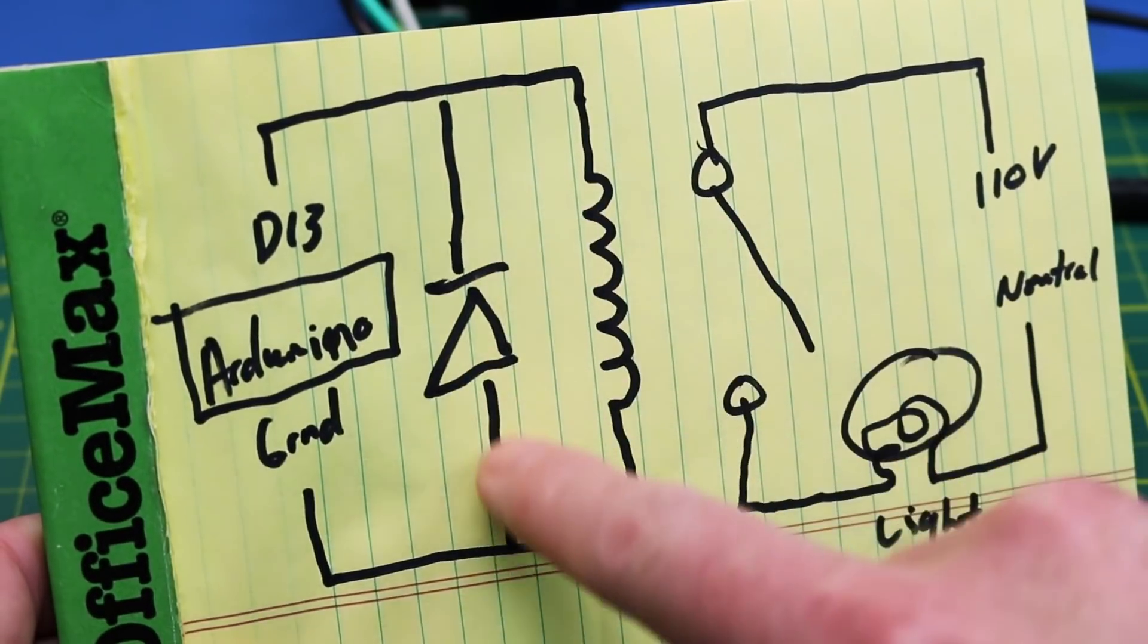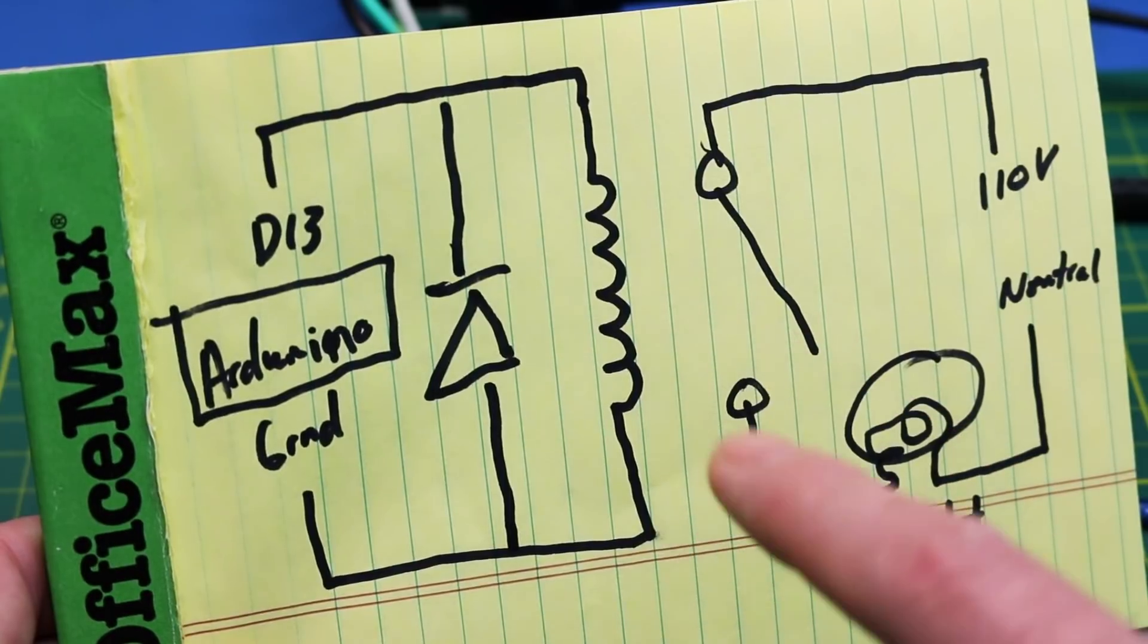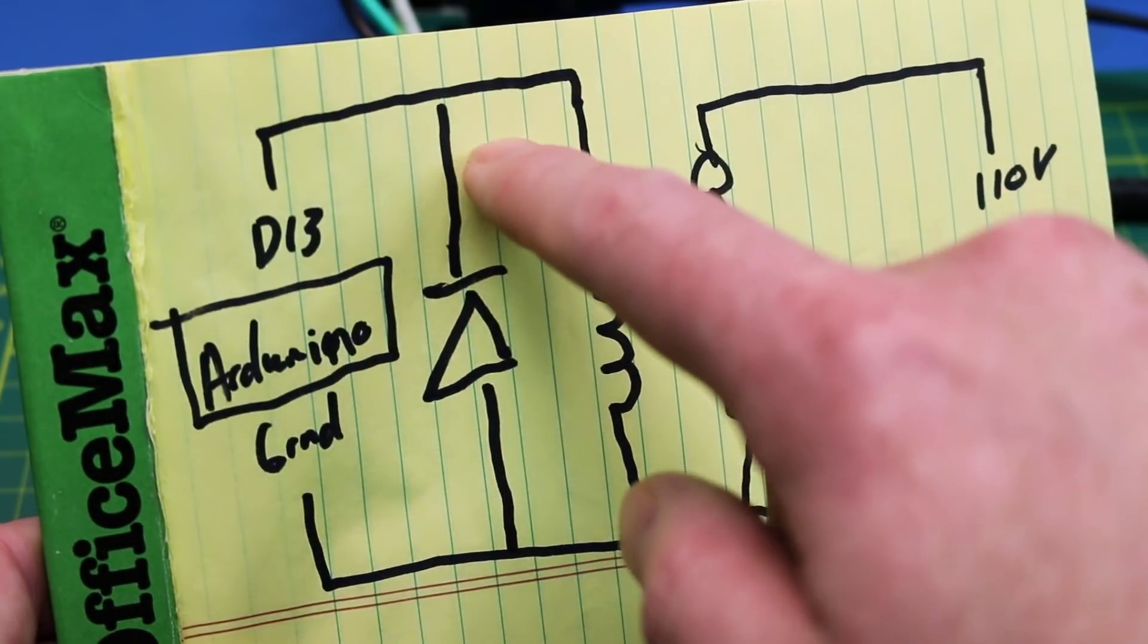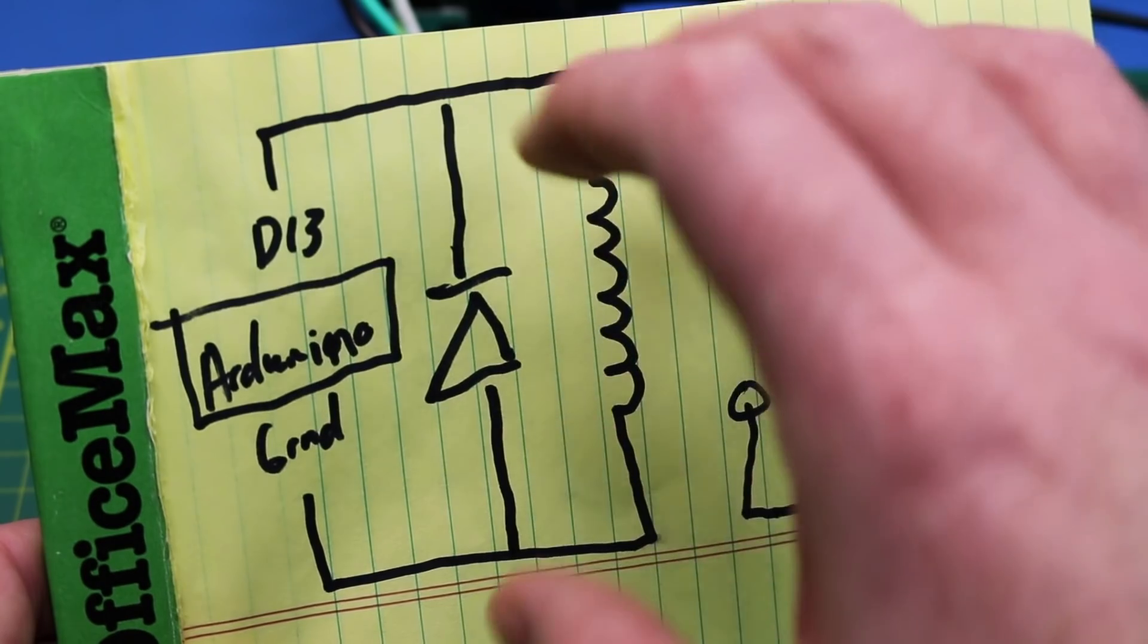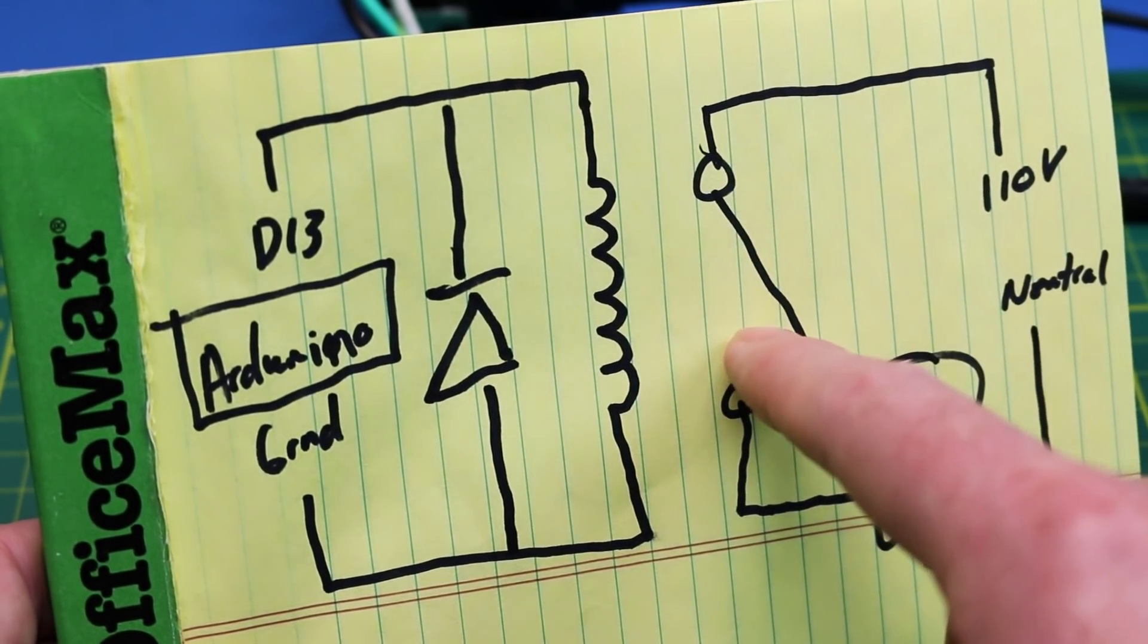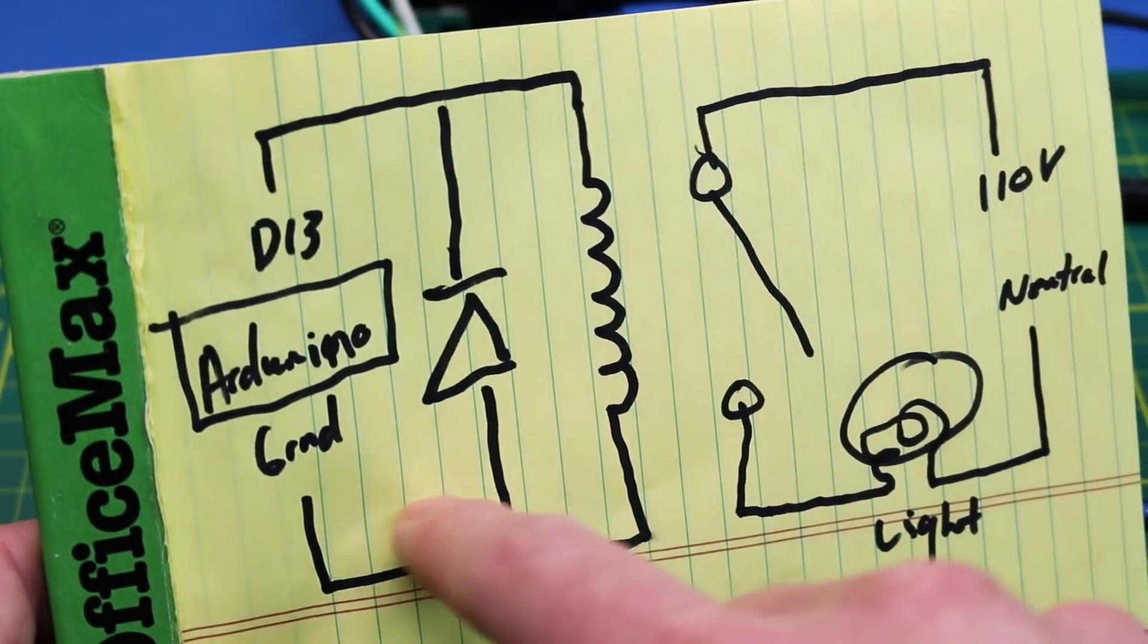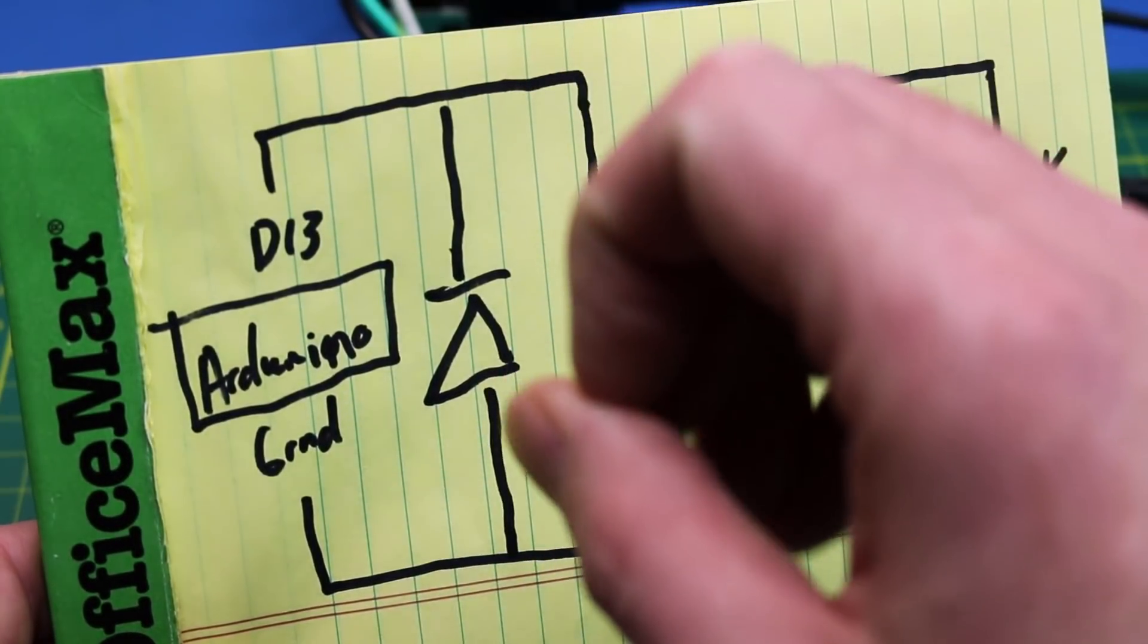One last thing I didn't explain initially. There's one more component here that's important if you're going to be using relays that maybe aren't designed for electronics use. Across our coil here we have a diode, and this is because as we energize our coil, our magnetic field expands and we pull in this movable contact, make contact through our light. The funny part comes in when you disconnect your power.